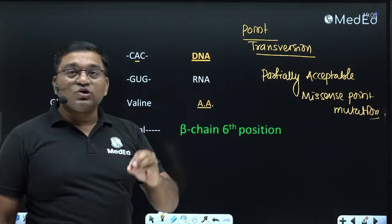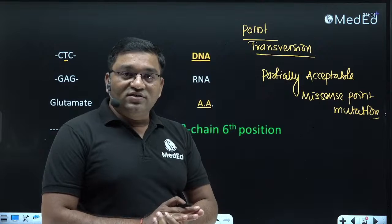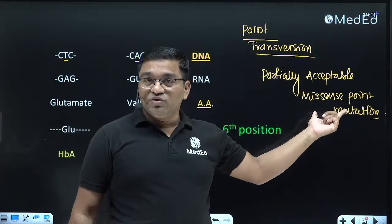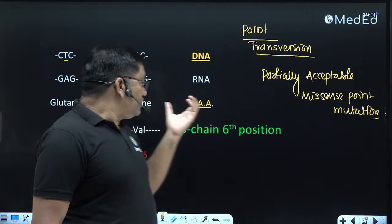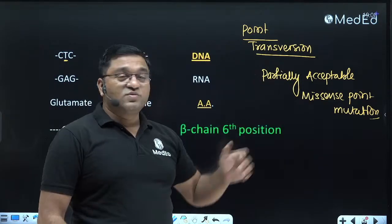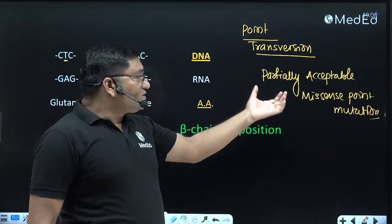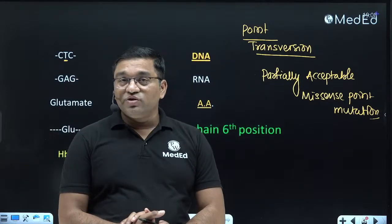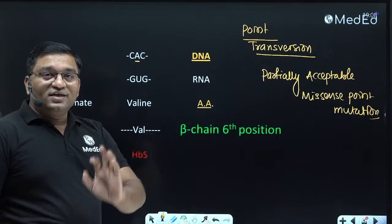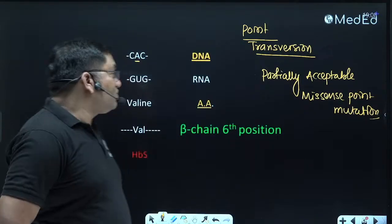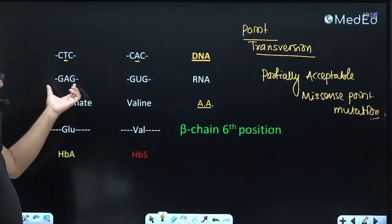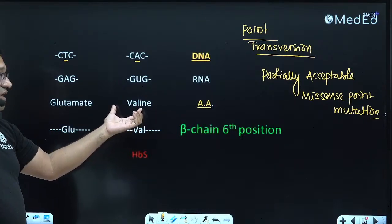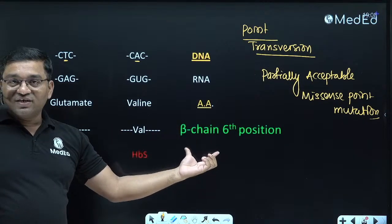The change in codon codes for a different amino acid — that is called missense point mutation. It is compatible with life, which is why it is called partially acceptable missense point mutation. In RNA, GAG is replaced by GUG, meaning glutamate is replaced by valine at the sixth position of the beta globin chain, forming hemoglobin S.